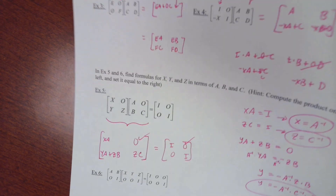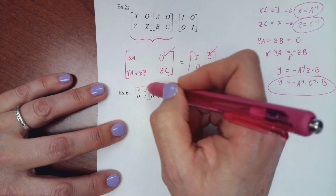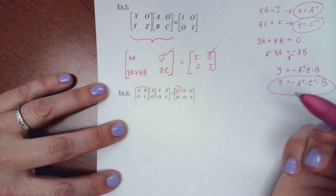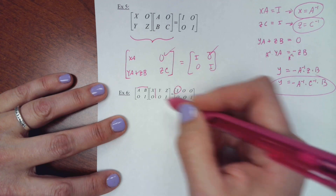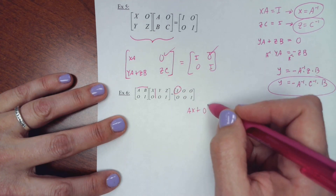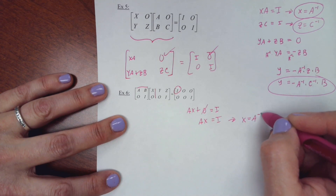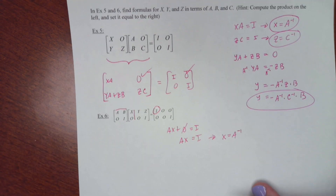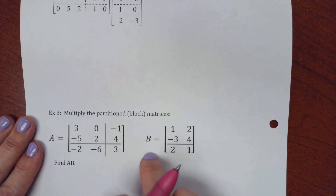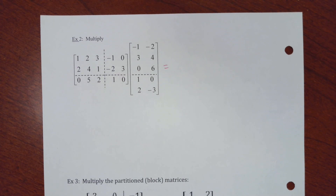We'll do the last example in class next time — it's the same idea: multiply it out, match blocks to the identity, and solve. If you were in class, you can stop the video and work on the homework problem. If you weren't here or needed a refresher, keep watching for the numerical block multiplication example coming up.